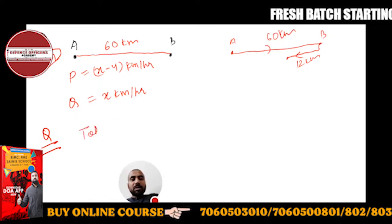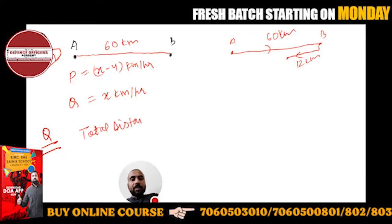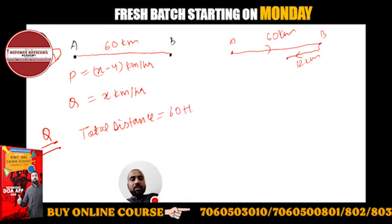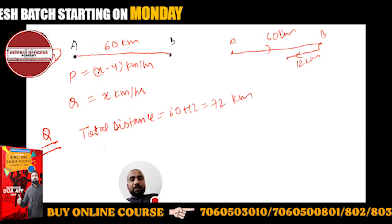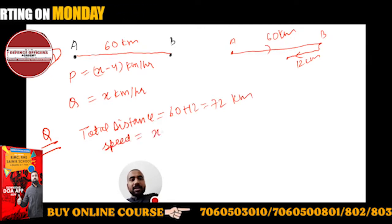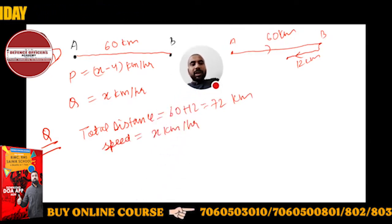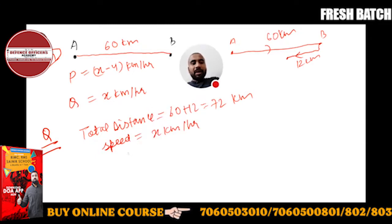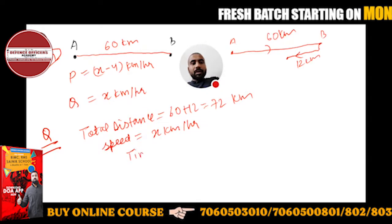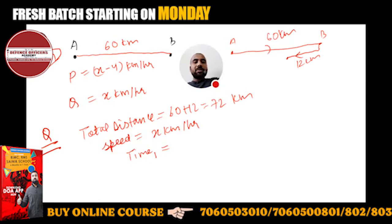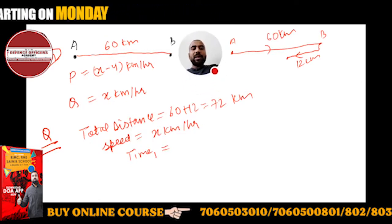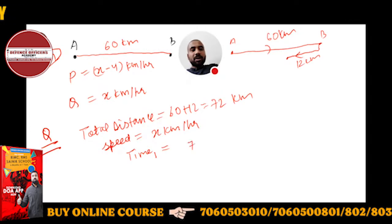So total distance Q covered is 60 km plus 12 km, which equals 72 km. Q's speed is x km per hour. As you know, speed equals distance upon time, so time will be distance upon speed, which is 72 upon x.